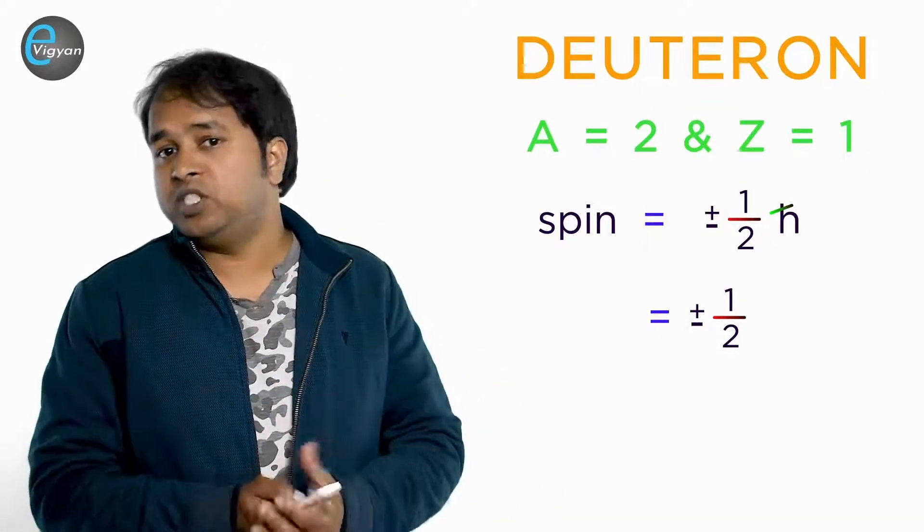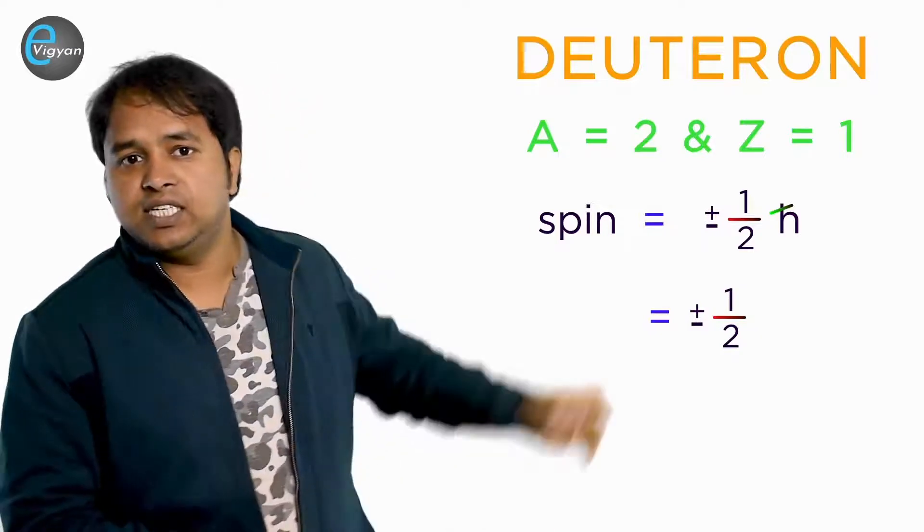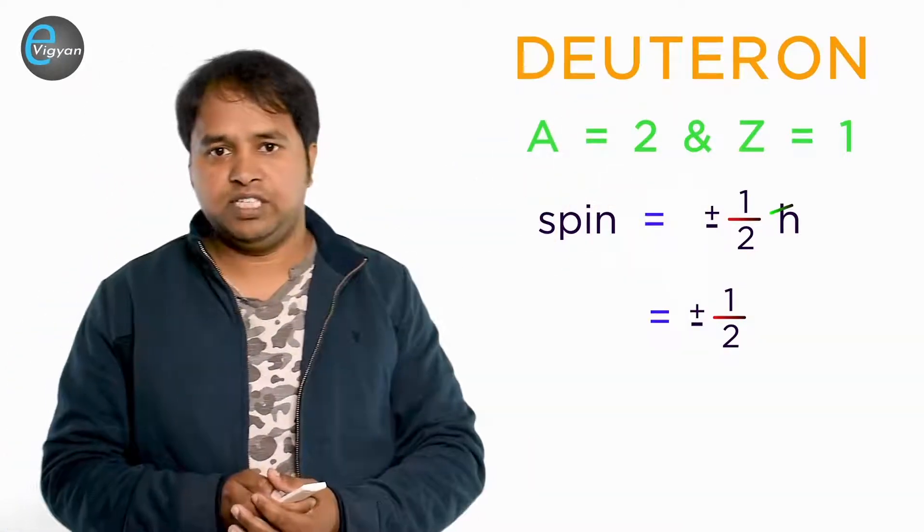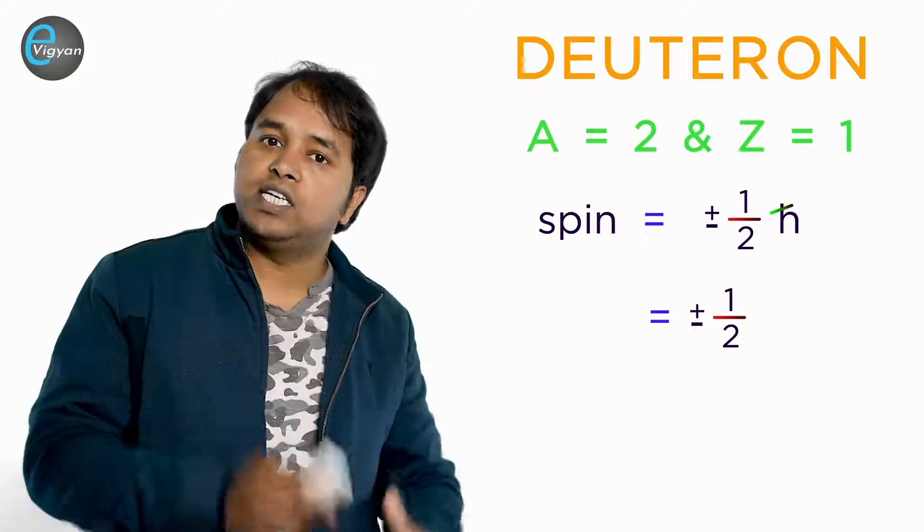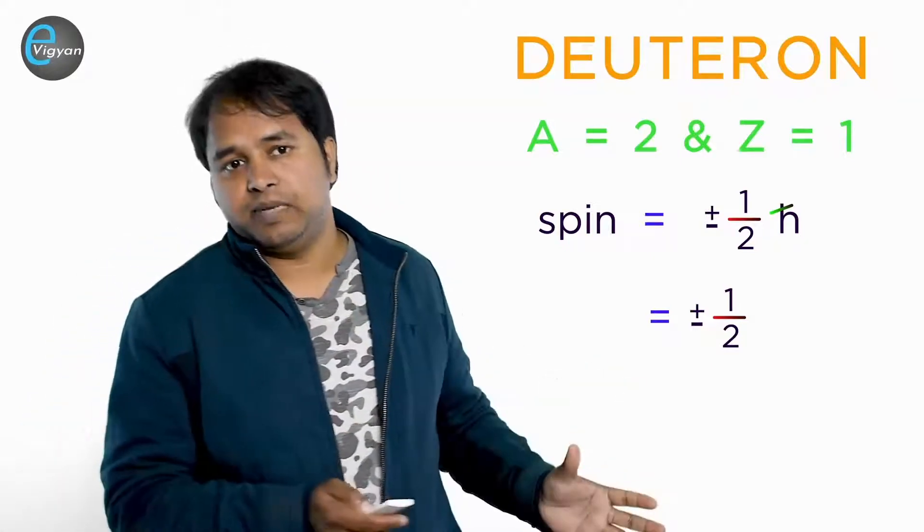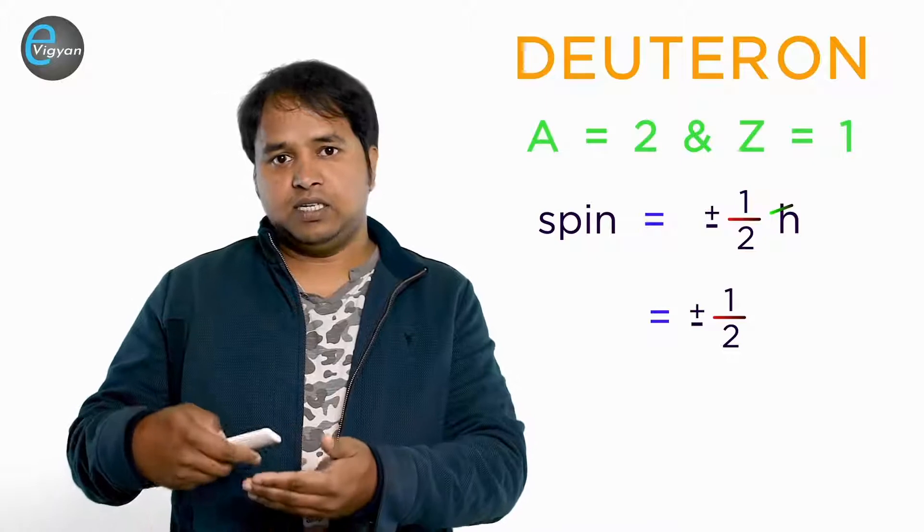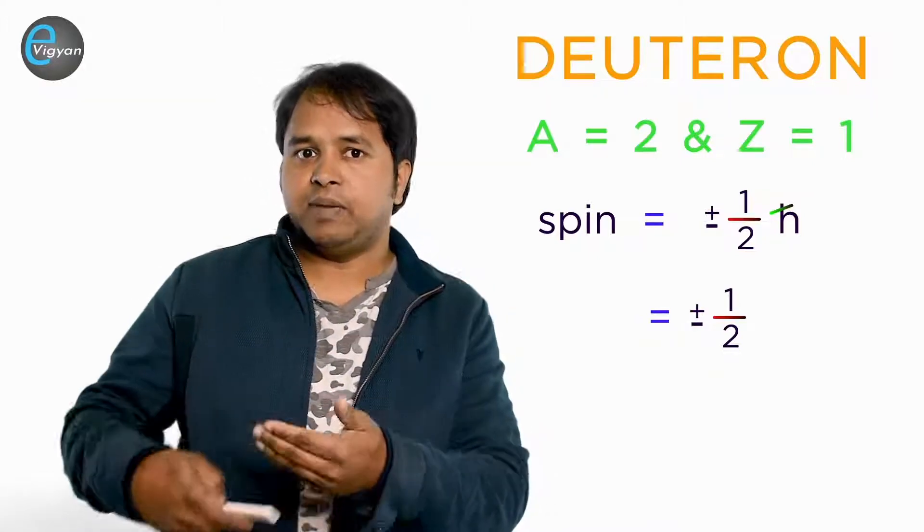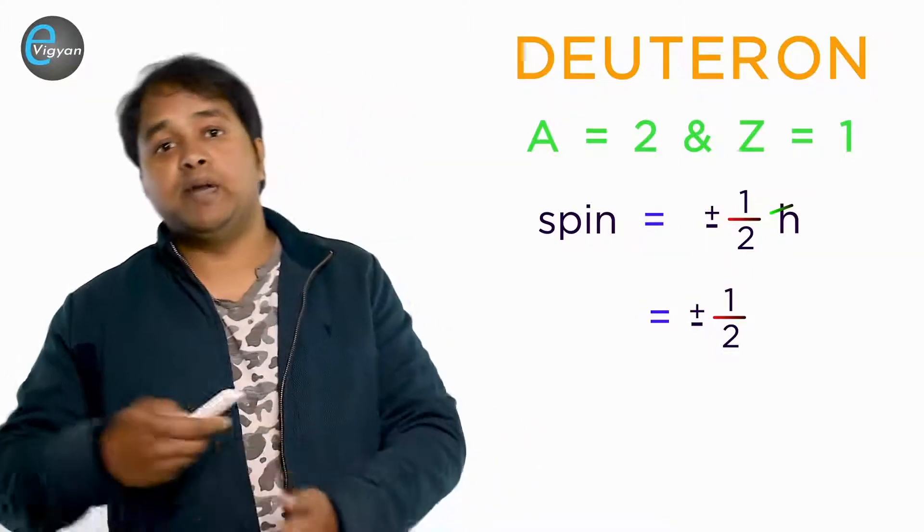If you want more information about natural unit, then you can click here and watch the video of natural units. So for proton and electron, we have a spin equal to ±1/2. Here plus sign is for the spin along plus Z axis, and minus sign is for the spin along minus Z axis.